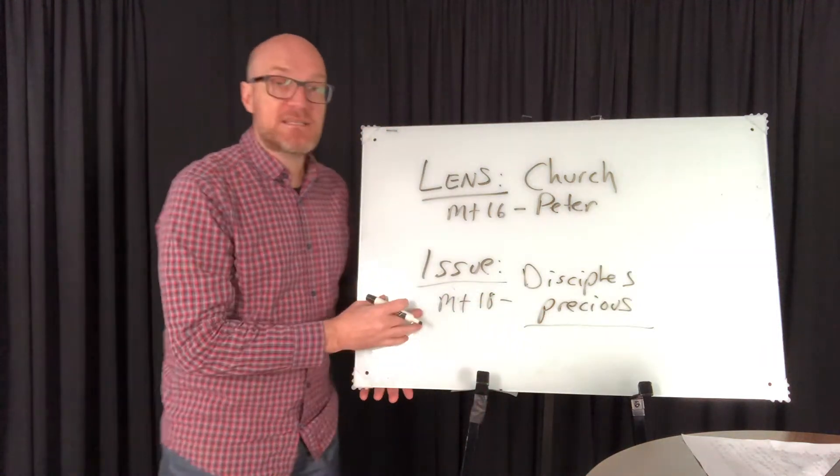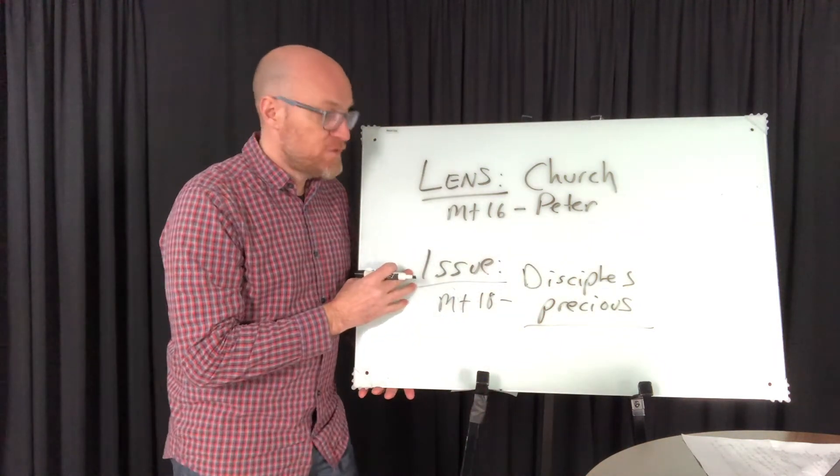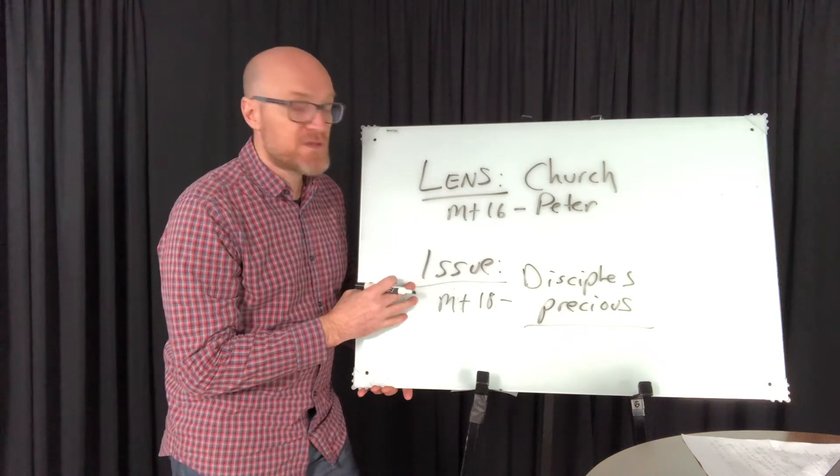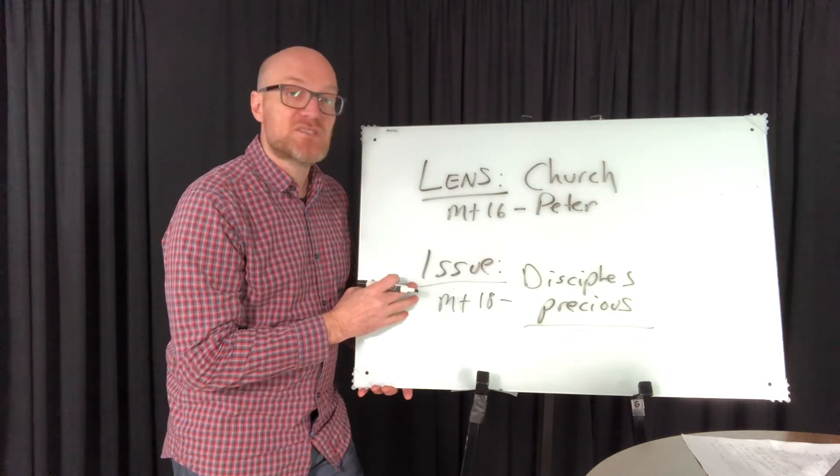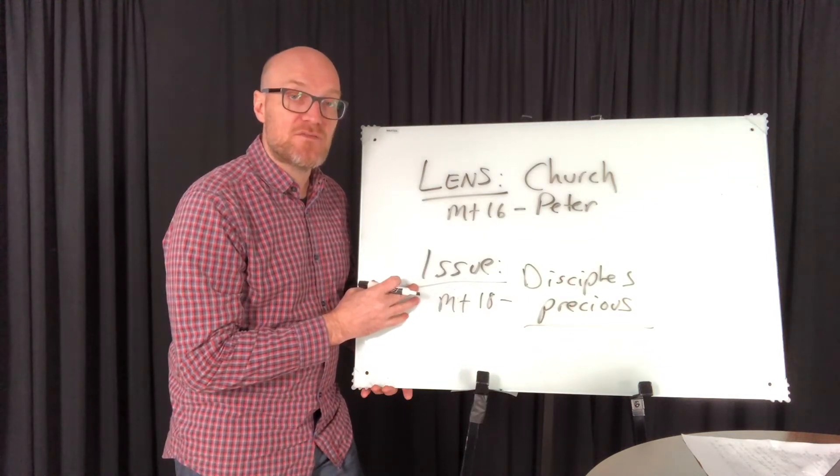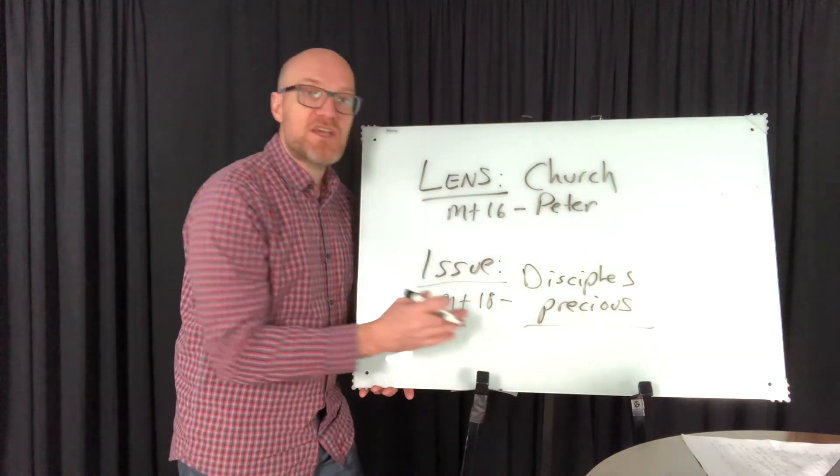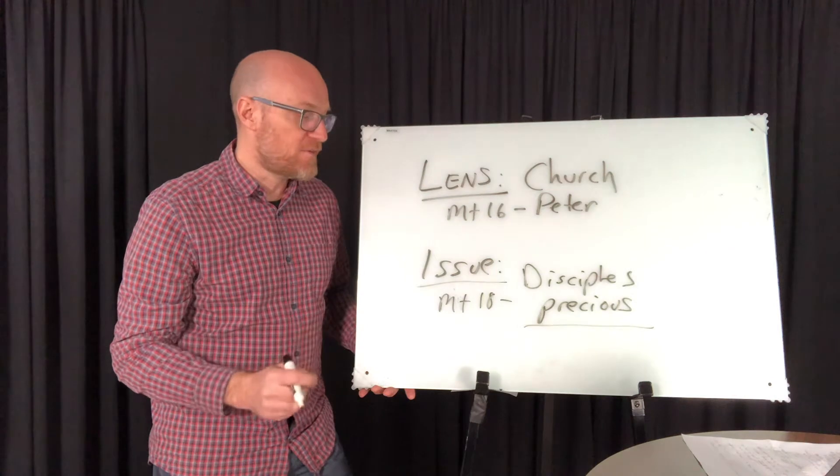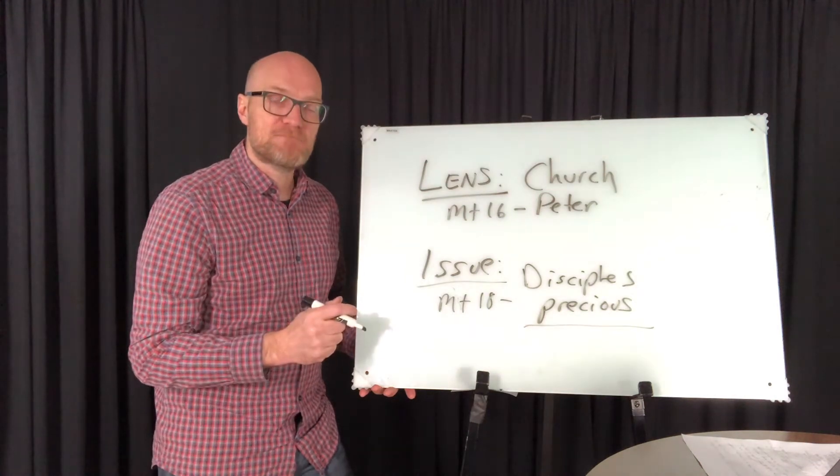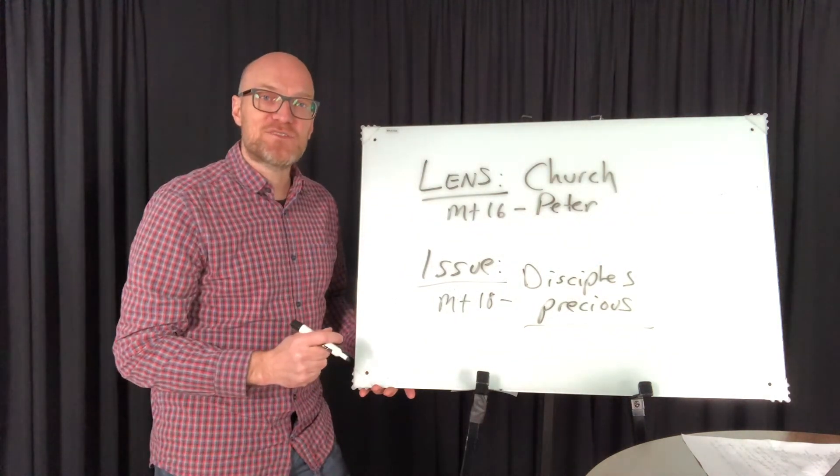And now, here in chapter 18, the issue comes out to view things through a church lens is to view disciples as being precious. In fact, the issue being that if you mistreat disciples, then you are mistreating Jesus himself. And if you are treating those disciples as precious, you are treating Jesus himself as being precious.